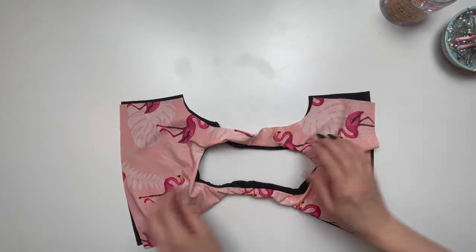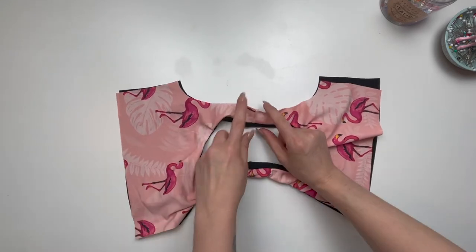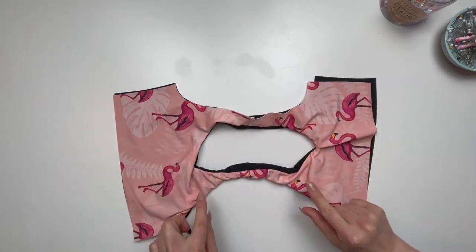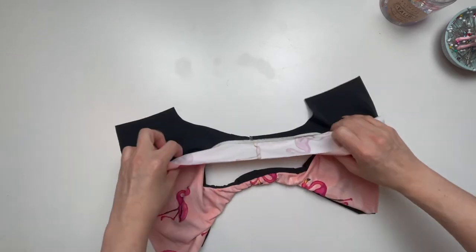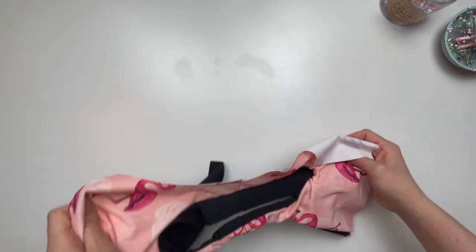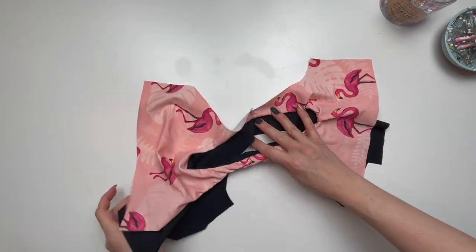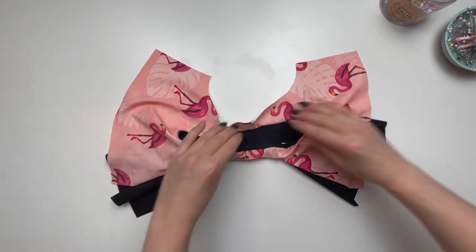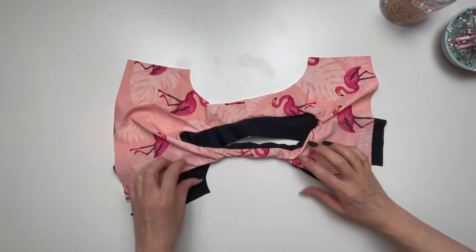Now we will repeat this process with the opposite side. Open the main and lining fabric so that you can see the armscye. Roll the remaining fabric towards that side.